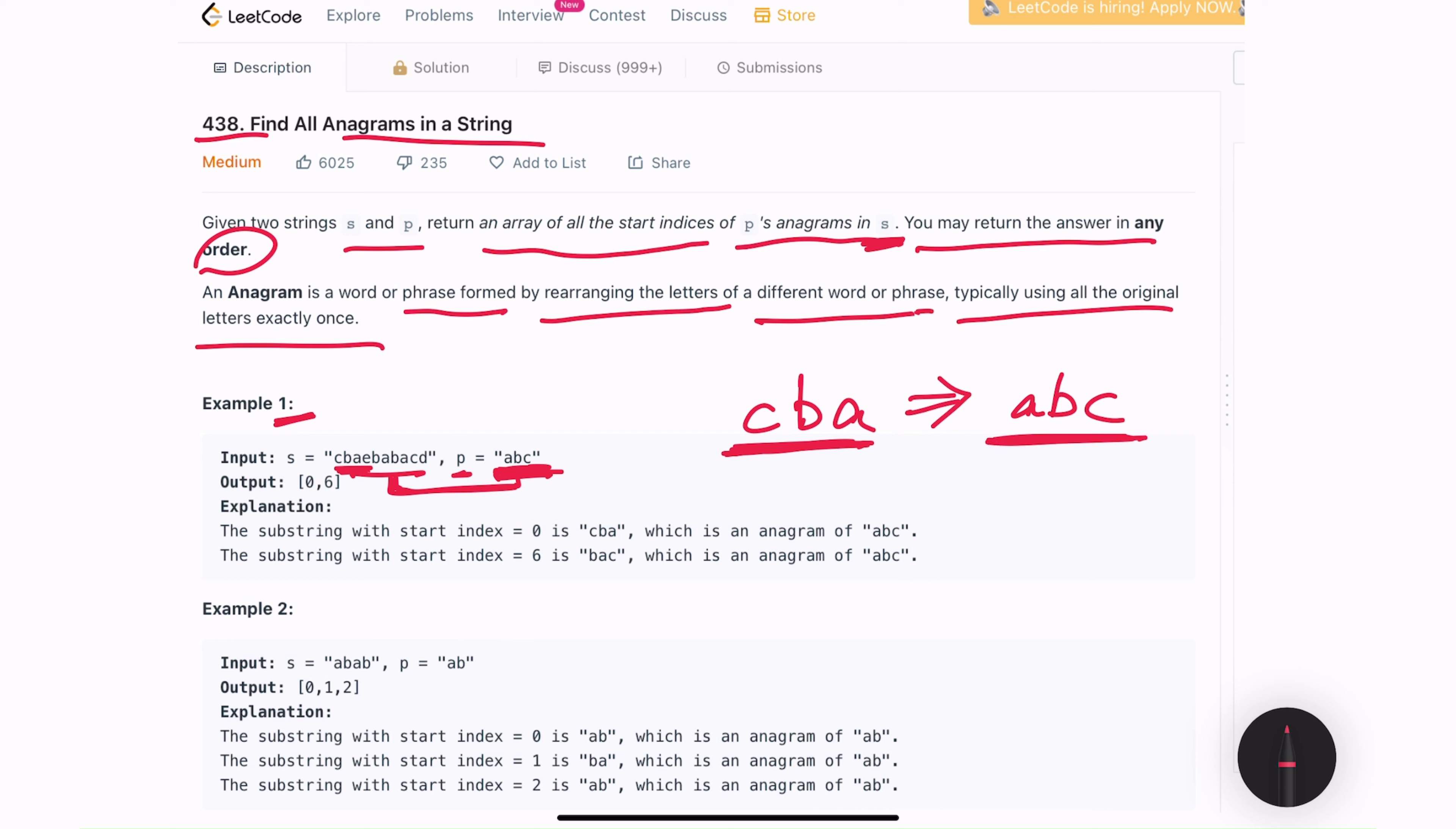Similarly, at index 6, we have b, a, c, which is again an anagram of a, b, c. It's just arranged in a different way. Because we have two anagrams in this s input, we are returning two indices as an output, 0 and 6. We need to return the starting index from where the anagram can be formed.